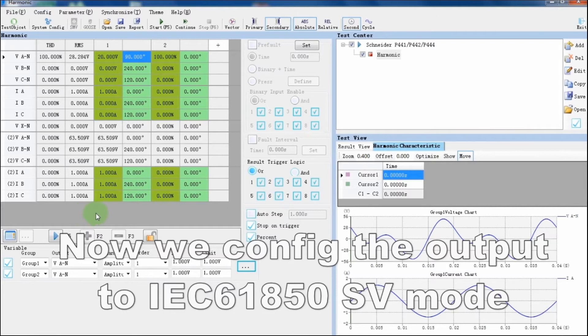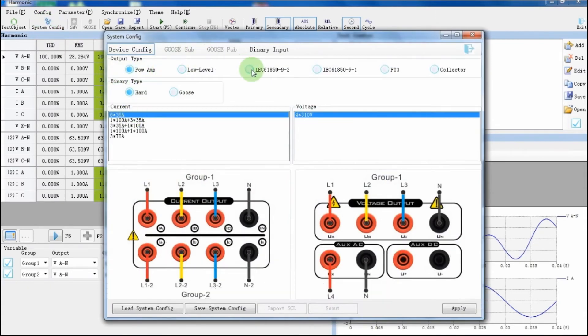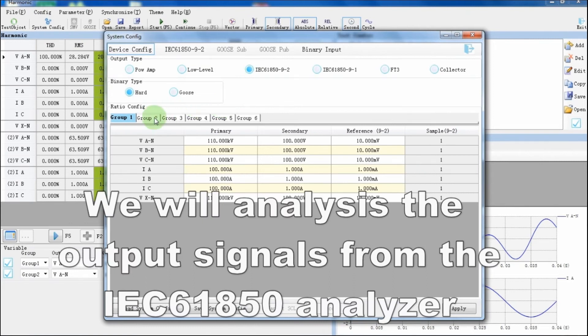Now, in the next part of the video, we will simulate the same harmonic signal using sampling value generator. And then, watch the waveform in the sampling value analyzer.